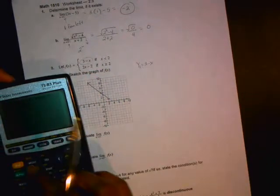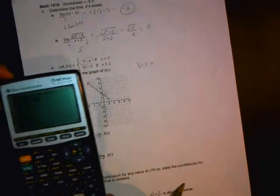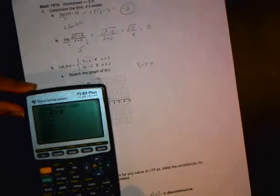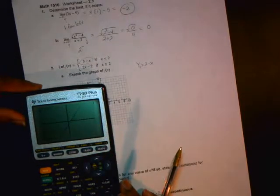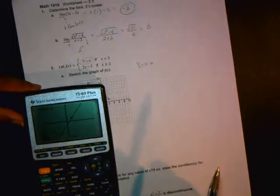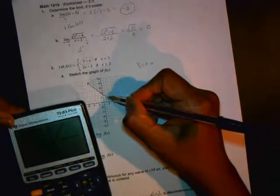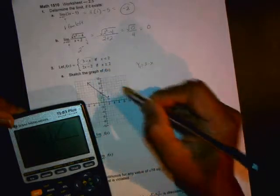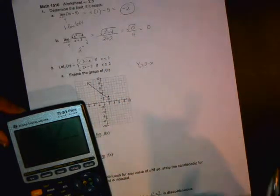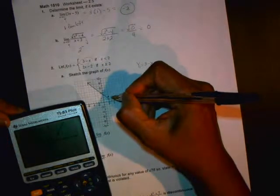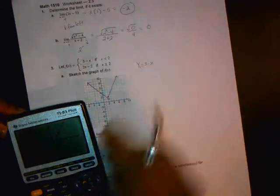And then go and type in 2x minus 2. Again, it's a line. Push trace, get two. And here, when x is two, y is two. So it's over here. And it's a solid dot because it's a greater than or equal to. I'm going to type in three to get one more point to make the graph look good. And there's the graph.